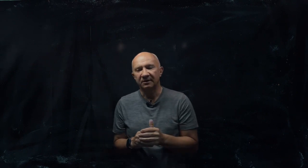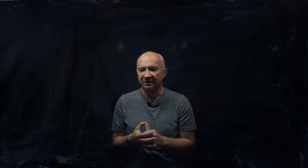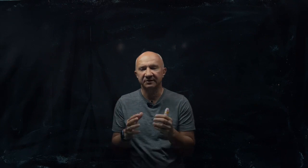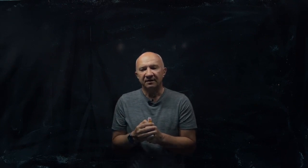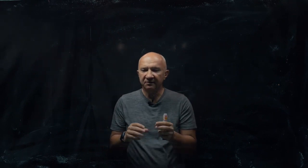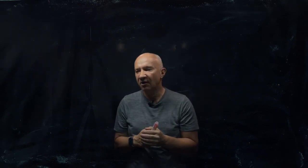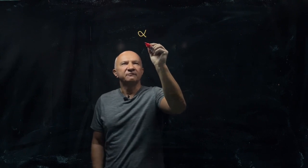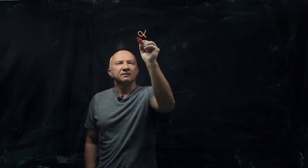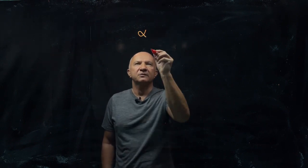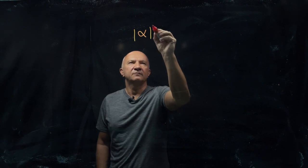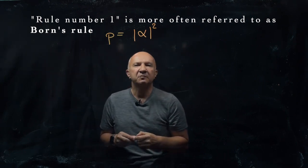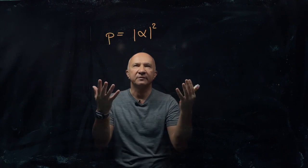Think about quantum theory, for the purpose of this series of lectures, as a kind of a new probability theory. It tells you how to calculate probabilities that something happens, and it does it in a way that can be summarized in three basic rules. The essential ingredient is a probability amplitude — it is a complex number — and whenever you want to get a probability, you take this complex number, let me just call it alpha, and the associated probability is the mod-square of alpha. So you take the absolute value, square it, and that is your probability. Let's call it rule number one: we play with probability amplitudes and we get probabilities by squaring probability amplitudes.